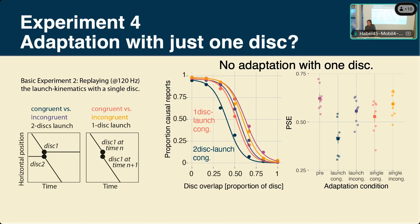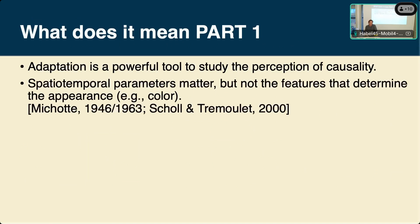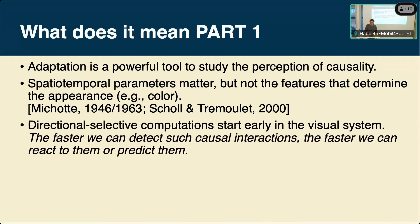To conclude Part 1: adaptation is a powerful classical tool to study visual phenomena including the perception of causality. Most of our evidence confirms that spatiotemporal parameters matter for detecting causal relations, but it's not about how the stimuli look or the object identity.